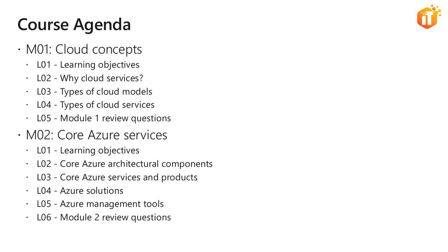Furthermore, we will describe products available for networking such as virtual network, load balancer, VPN gateway, application gateway and content delivery network. We will also explore storage services such as blob storage, disk storage, file storage and archive storage. Then we will cover databases available on the Azure platform such as Cosmos DB, Azure SQL database, Azure database migration service and Azure SQL data warehouse. Finally, we will talk about Azure Marketplace and its usage.